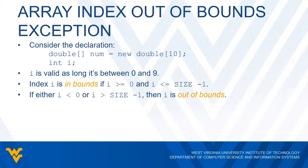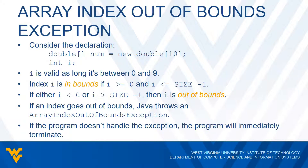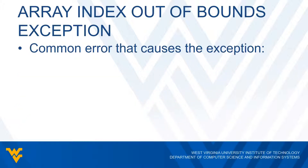Why is this important? Our index is only valid between 0 and 9. So if the index goes outside these bounds, Java is going to throw what's called an ArrayIndexOutOfBoundsException. If the program doesn't handle this exception, the program will immediately terminate. We've already seen cases where we can handle exceptions, and this is one where if we don't handle it, the default behavior is just to terminate the program. Now we'll look at a very common error that would cause this exception.